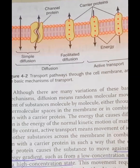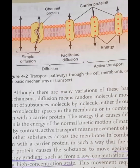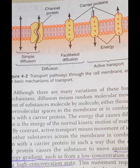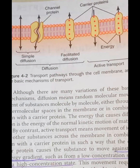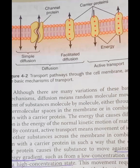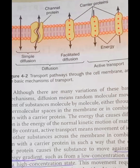Protein channels in simple diffusion have two important characteristics. First, they are selectively permeable to certain substances — for example, potassium leaky channels allow only potassium, and sodium channels allow only sodium. Second, many channels can be opened or closed by gates. Gates regulated by electrical signals are called voltage-gated channels, while gates that open when a chemical binds are called ligand-gated channels.